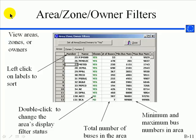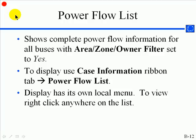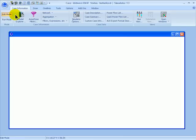The Area Zone Owner Filters dialog also shows the total number of buses in each area, as well as the minimum and maximum bus numbers assigned in each respective area. PowerWorld Simulator also includes text displays for compatibility with the look and feel of PSSE. One of these is the Power Flow List, which shows complete information for all buses with the Area Zone Owner Filters set to Yes. To reach this display, go to the Case Information ribbon and select Power Flow List.